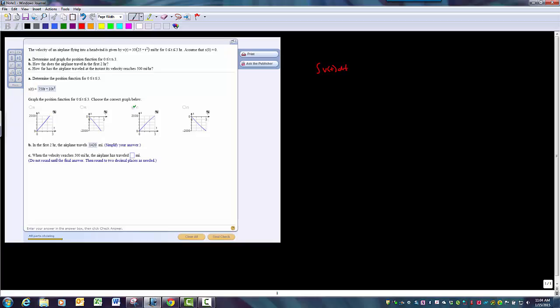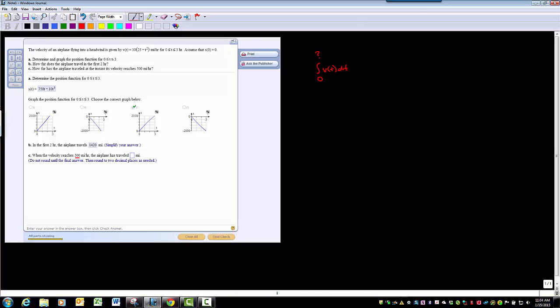But now we need the amount of time. Clearly it's from zero to something. We just don't know what that something is. So what we need to do is we need to find out when is the velocity equal to 500.